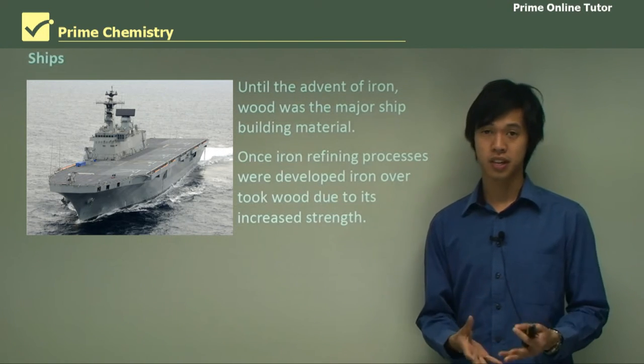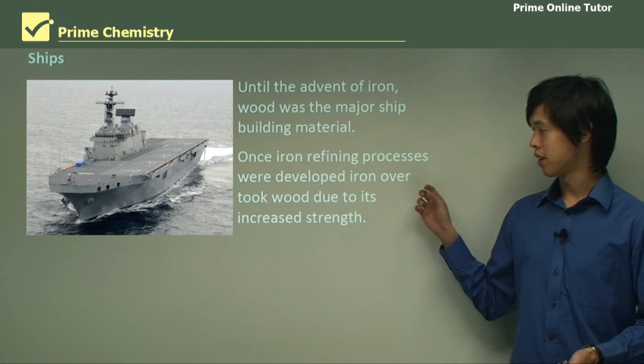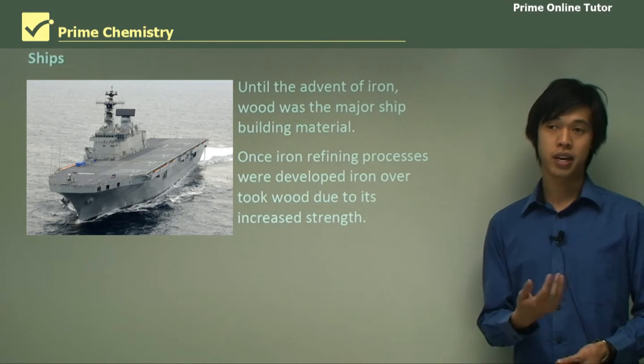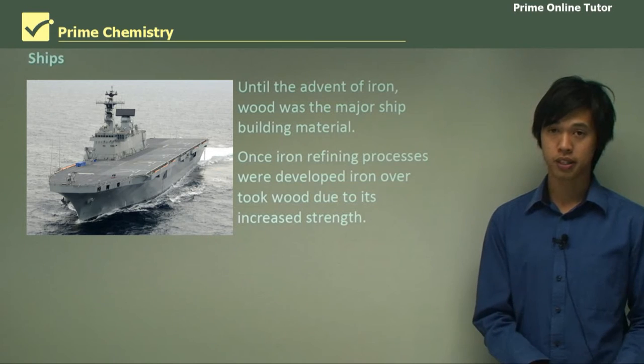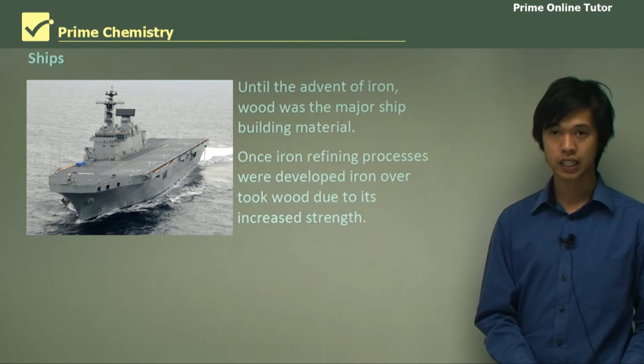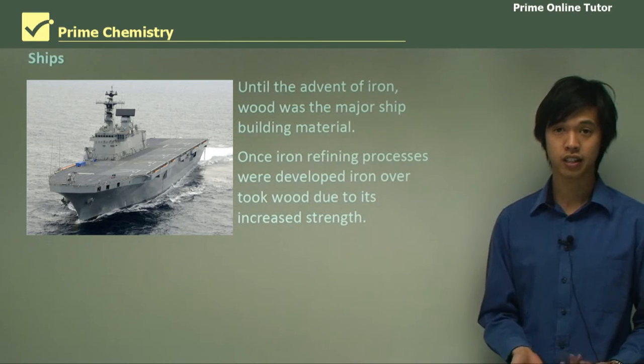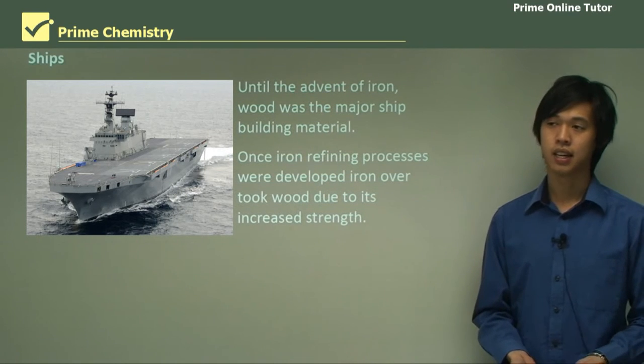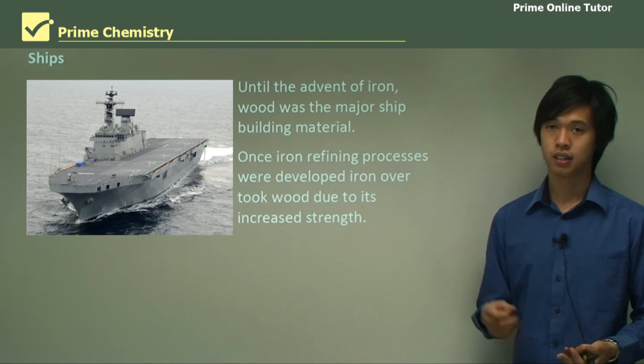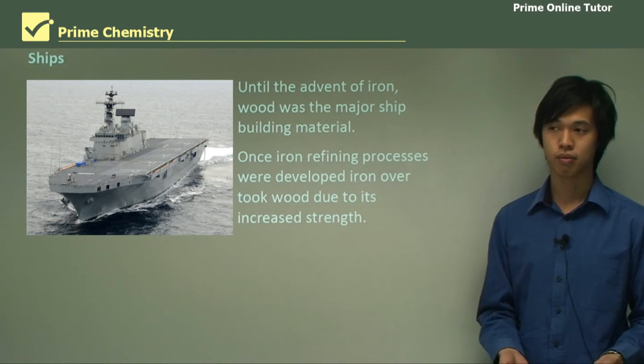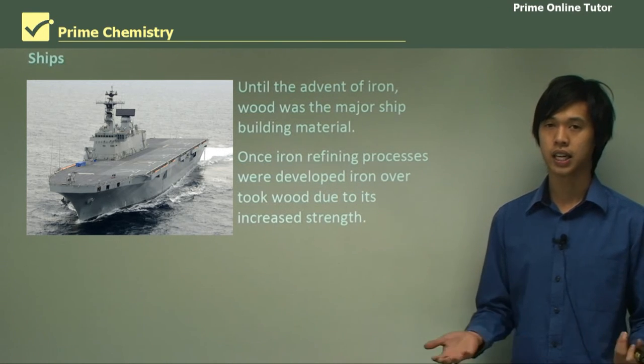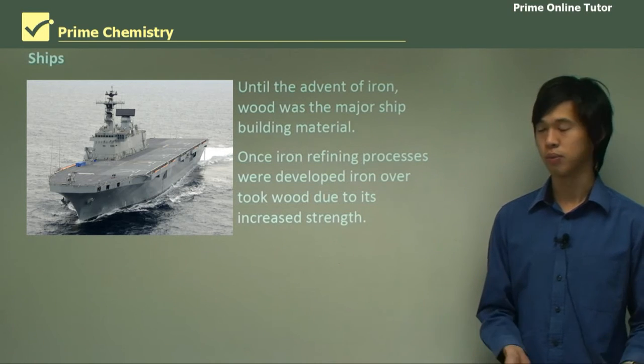Once we developed iron refining processes, we took iron as a better building material than wood, because it's stronger. You could use a smaller amount of iron, and so it could be lighter. And it would take less working in order to get it to ship shape.